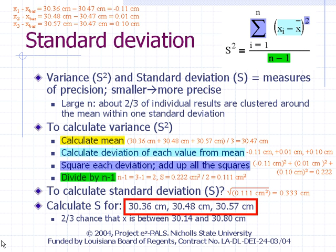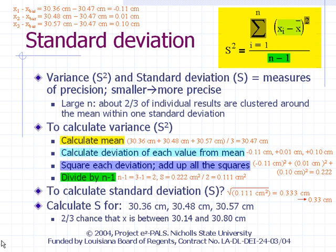If you need to report the standard deviation, it is customary to report up to one digit past the first non-zero digit. If using it to calculate the standard error, keep an extra digit to avoid round-off errors. Variance and standard deviation are referred to as measures of spread. If we were to repeat our measurements numerous times, we would expect about two-thirds of individual trial results to cluster around the mean within one standard deviation. In our example, there is a two-thirds chance that a single trial result will fall between 30.14 and 30.80 centimeters.